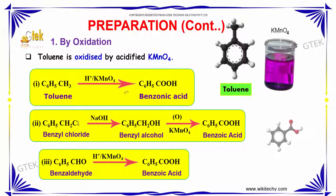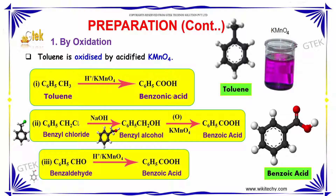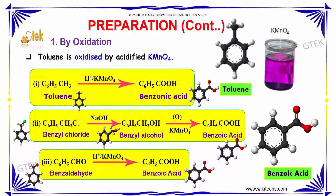Toluene is oxidized by acidified KMnO4 to form benzoic acid. Similarly, benzyl chloride is oxidized in the presence of sodium hydroxide to produce benzyl alcohol, which is further oxidized in the presence of potassium permanganate to form benzoic acid. When benzaldehyde is oxidized in the presence of potassium permanganate, we also obtain benzoic acid.